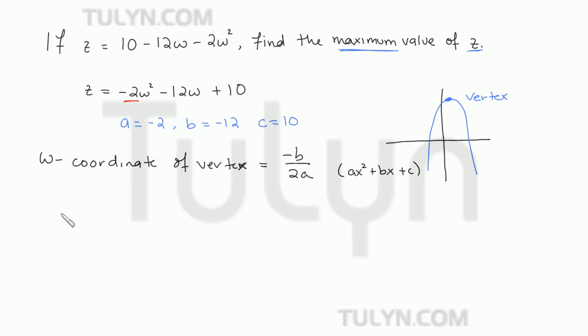So in this case, our w for the vertex is going to be minus negative 12 over 2 times negative 2. So we get 12 on the top and negative 4 on the bottom. So our w-coordinate for the vertex is negative 3.